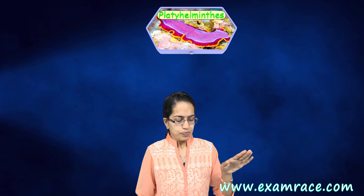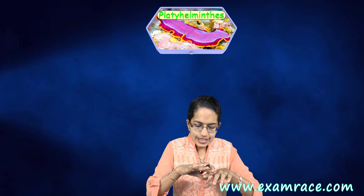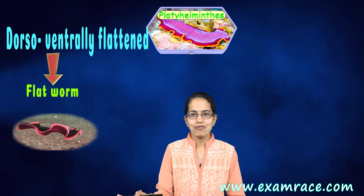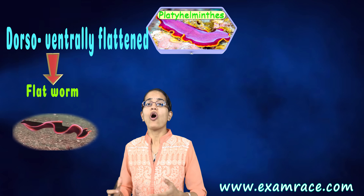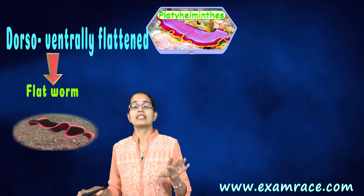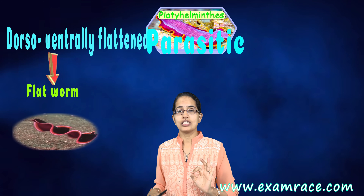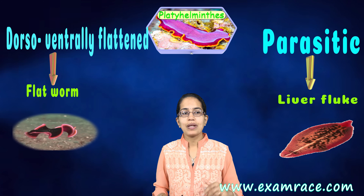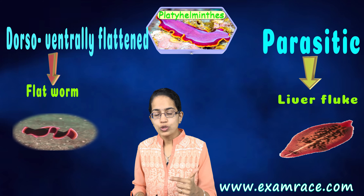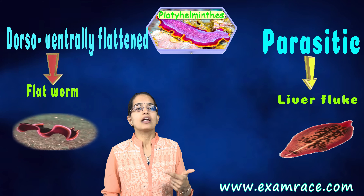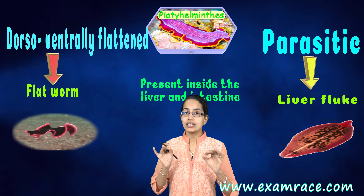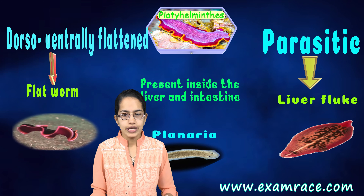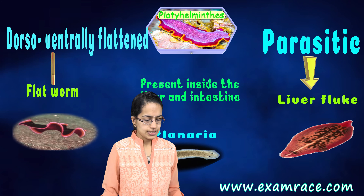Platyhelminthes are organisms which are flattened dorsal-ventrally. Flatworm is a very good example. These flatworms, or those which are Platyhelminthes, could be parasitic in nature. Liver fluke is a good example. These Platyhelminthes are present in the intestine and in the liver. So planaria and liver flukes are good examples to explain Platyhelminthes.